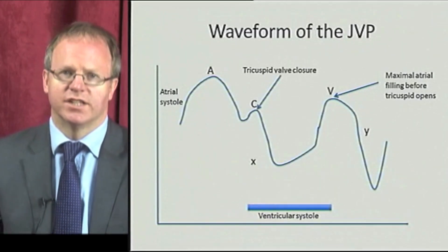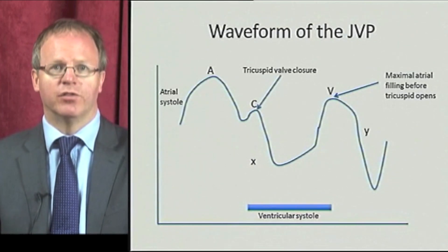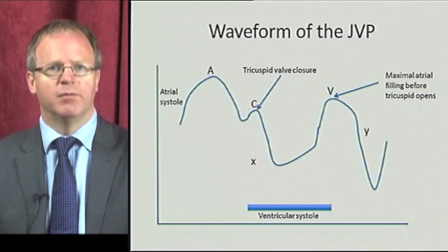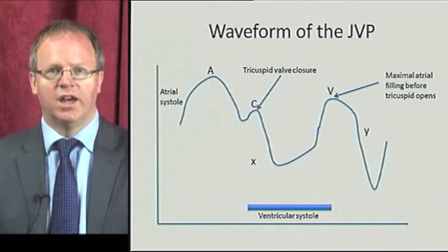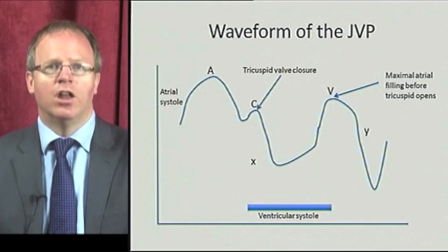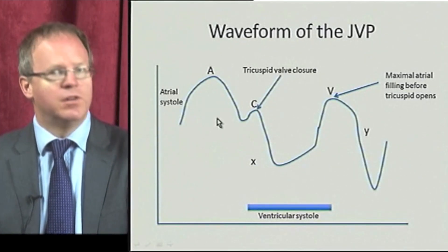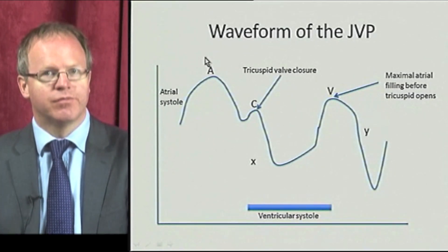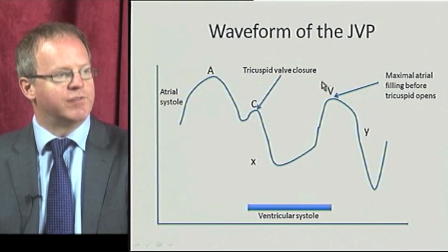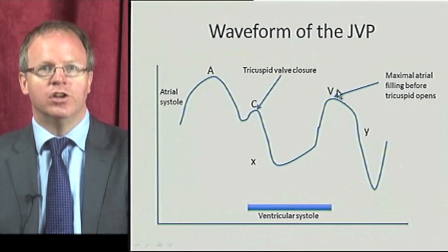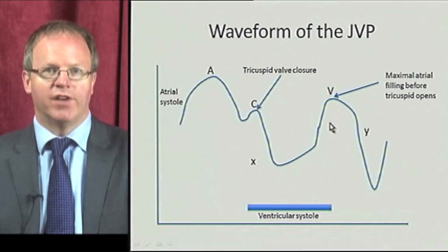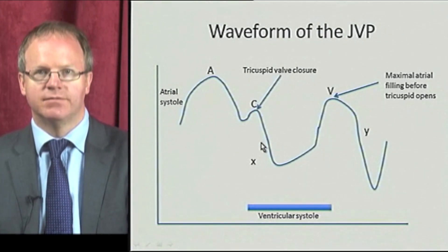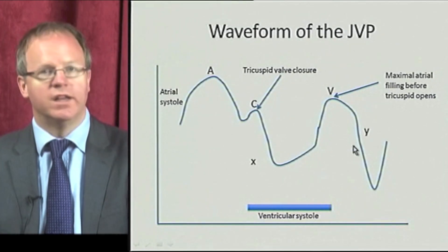Assessing the waveform of the JVP can be very difficult and it takes a significant amount of practice. That being said, it can provide very valuable information on the condition of the heart. As can be seen in this diagram, normally the waveform is bifid. First, you get the effect of atrial contraction with the A wave, and then later during ventricular contraction you get the V wave when the AV valves are shut. The A wave is followed by a descent known as the X descent, and the V wave is followed by the Y descent.